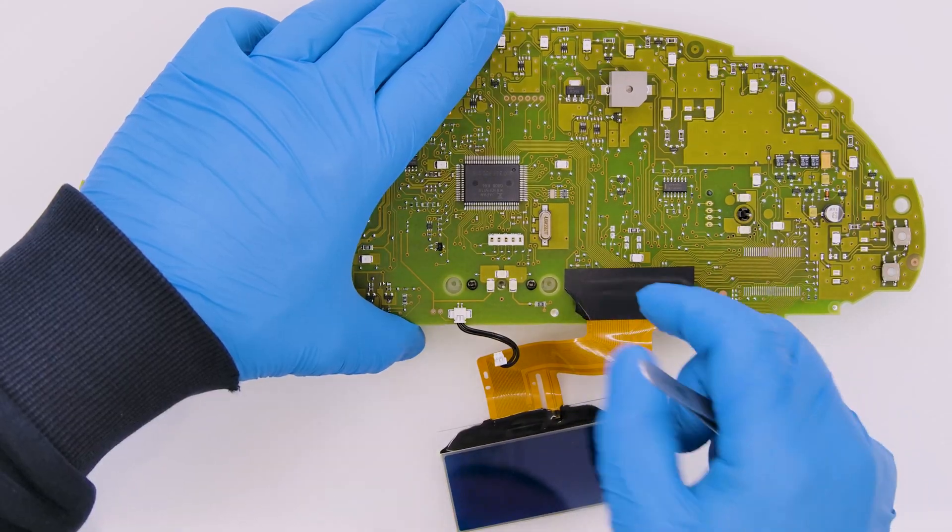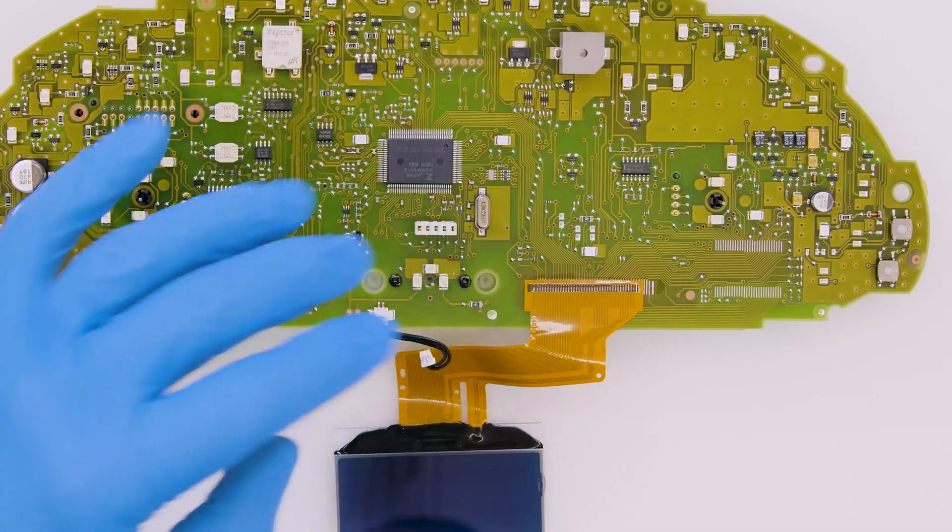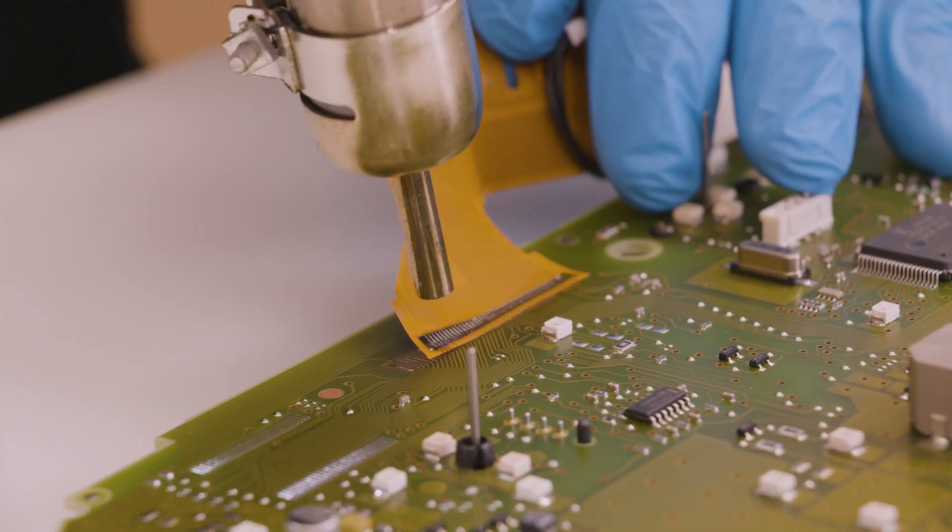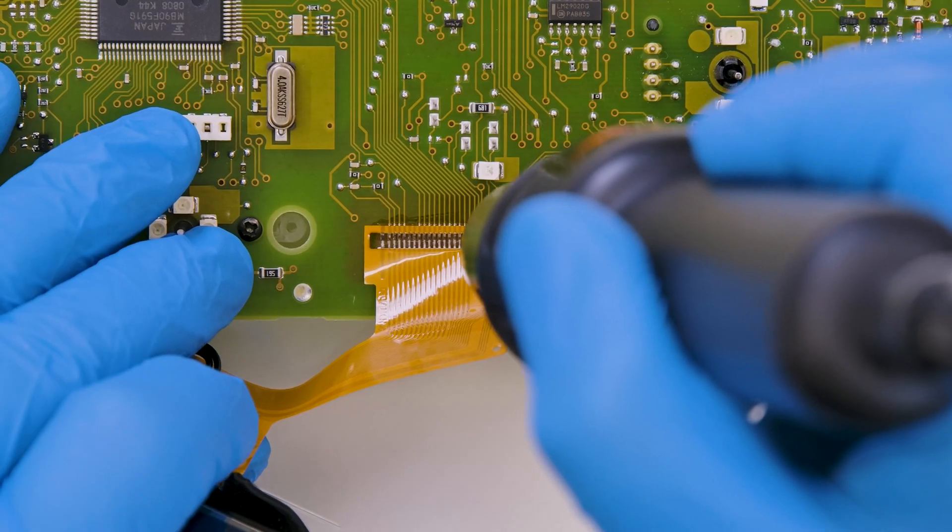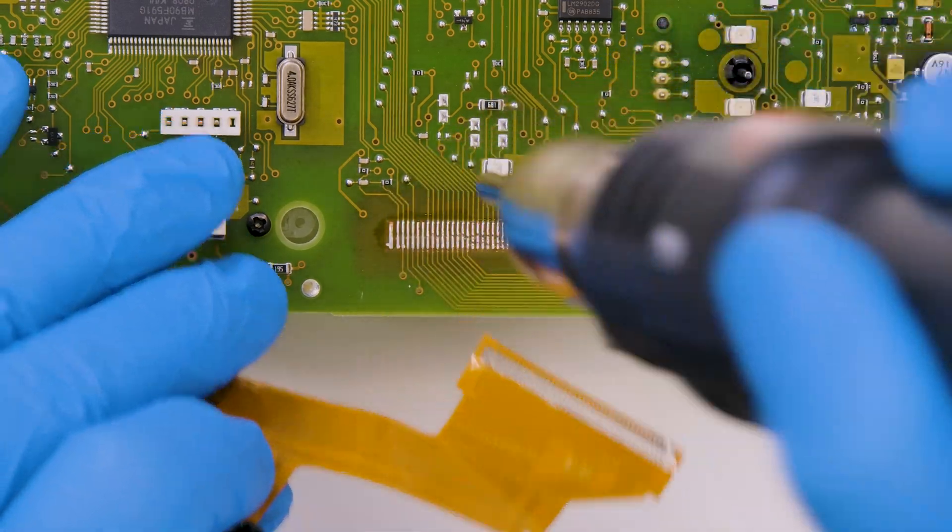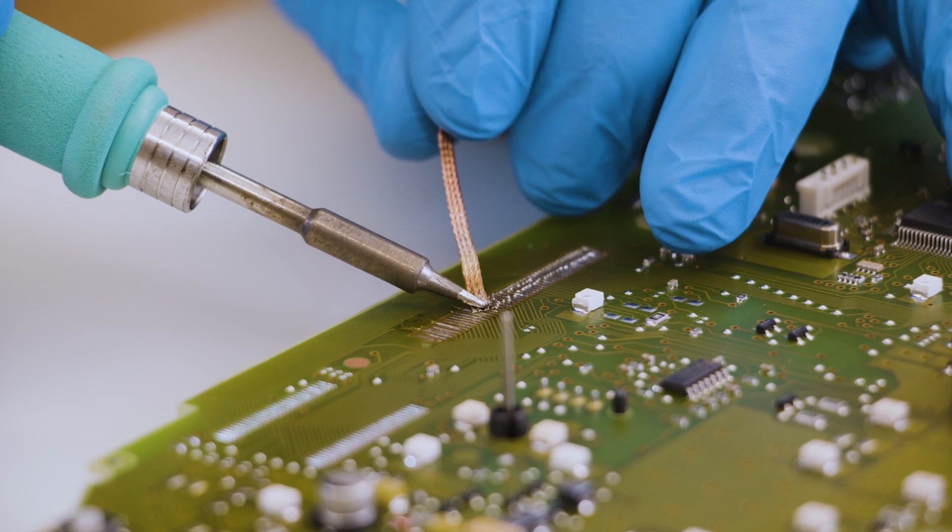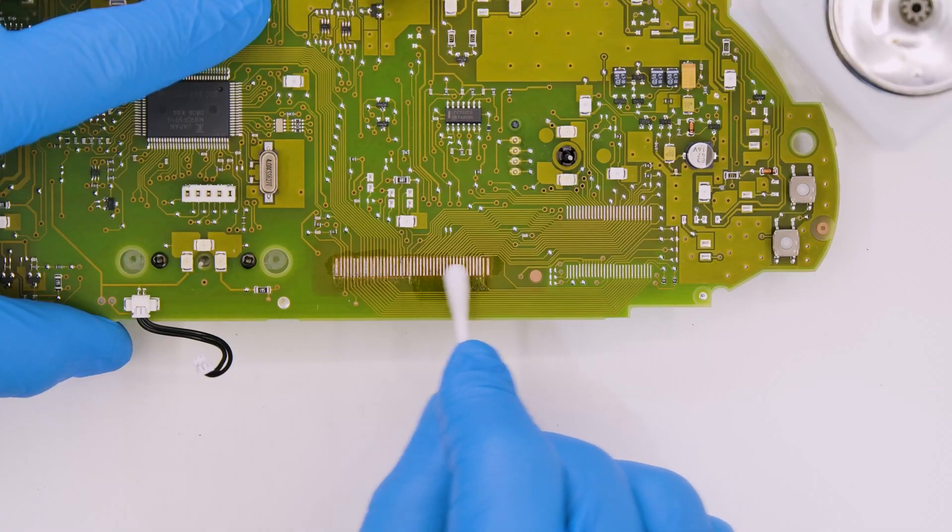Detach the tape and, with the hot air desoldering iron, desolder the FPC. Remove any thin residues with the solder wick. Clean with some solvent.